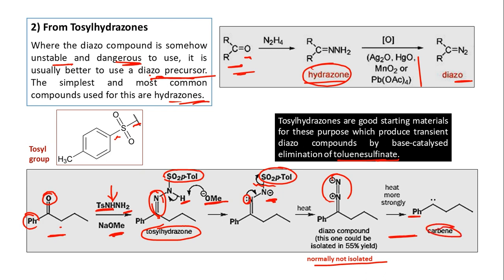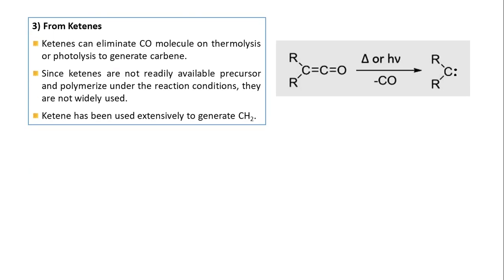So finally we are getting carbene with one side being phenyl (Ph) and the other side being a three-carbon chain. The third method uses ketene as a precursor. The general structure of ketene is C=C=O. By thermolysis or photolysis, the CO part is removed and we get carbene. The problem is ketenes are not readily available and not very stable — they can polymerize under reaction conditions. However, ketene has been used extensively to synthesize the simplest carbene, CH₂, where the two R groups are hydrogen atoms.